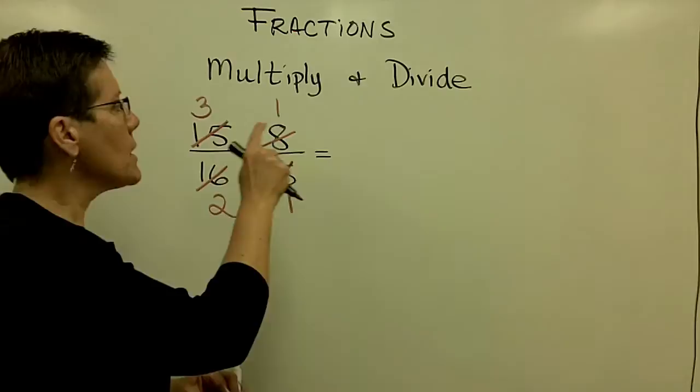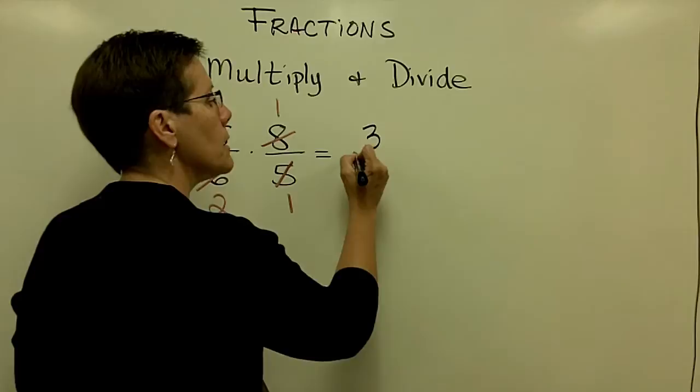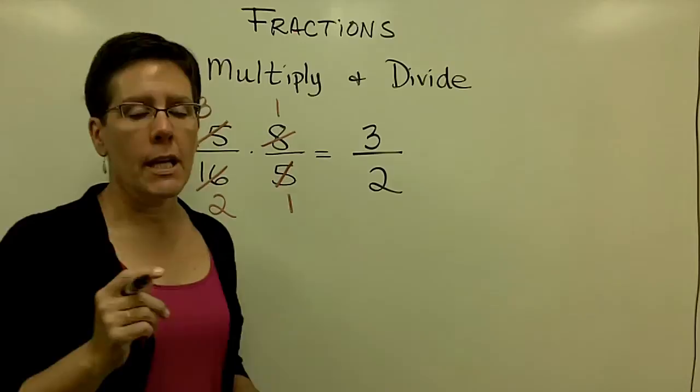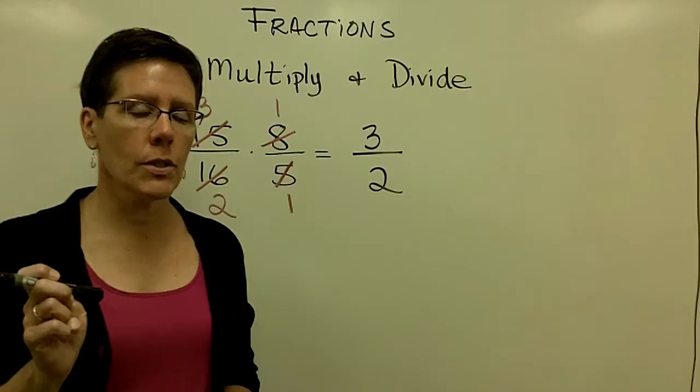And when you multiply fractions, all you do is multiply straight across. So I'm going to take the numerator, 3 times 1, and get a value of 3. And in the denominator, 2 times 1, and get a value of 2. And my answer is 3 halves or 1 and a half.